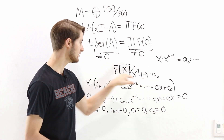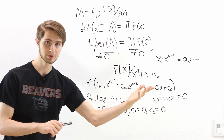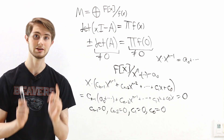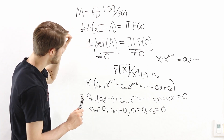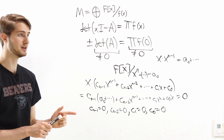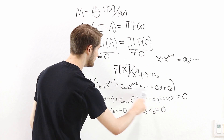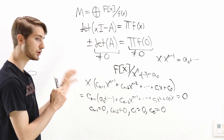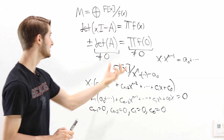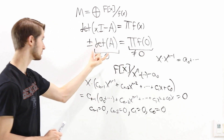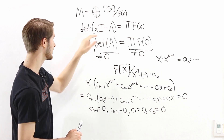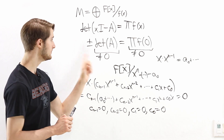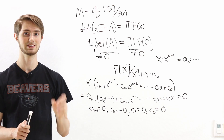For a cyclic fx module, the kernel of multiplication by x is zero if and only if the constant term is non-zero. In a direct sum, multiplication by x is injective as long as no summand has a zero constant term — equivalently, no factor of x in the characteristic polynomial — which corresponds to det(A) being non-zero. Using fx modules, we have proved that a matrix is invertible if and only if its determinant is non-zero.